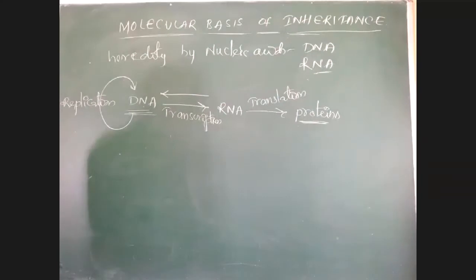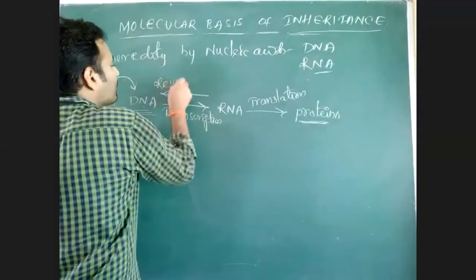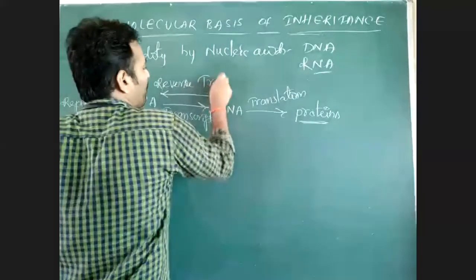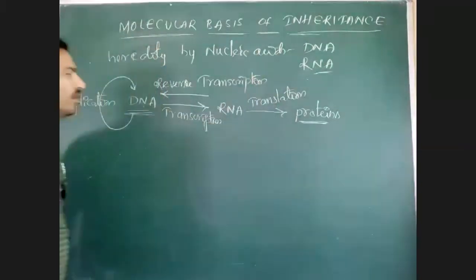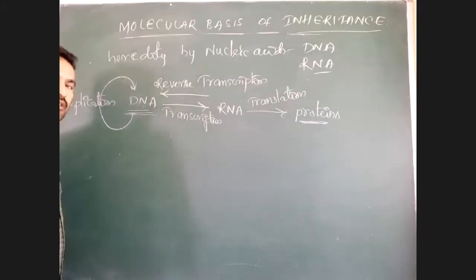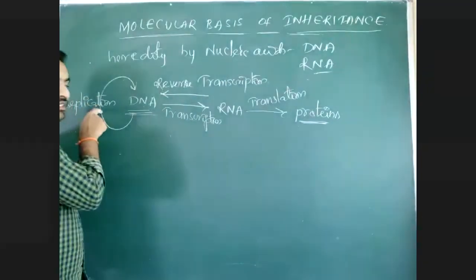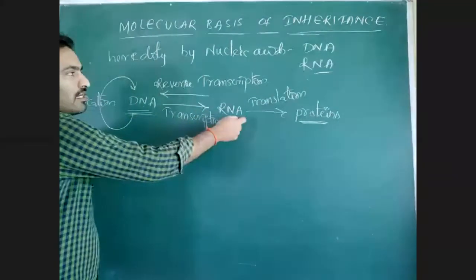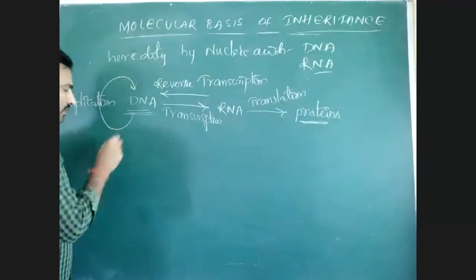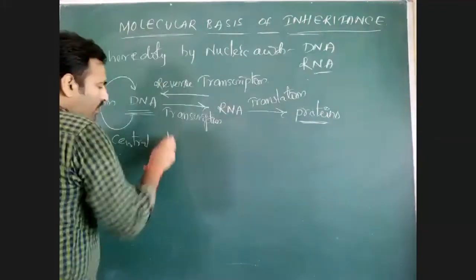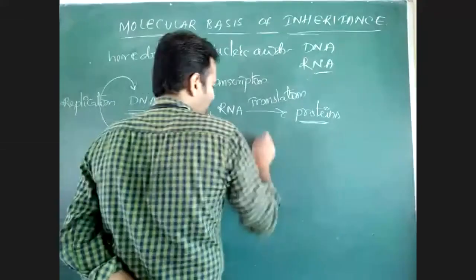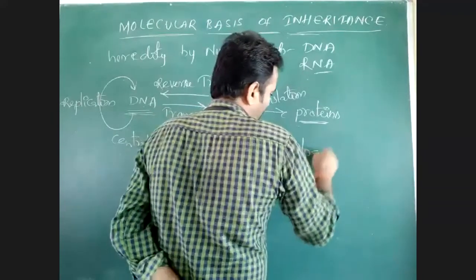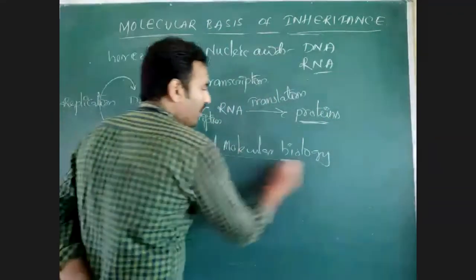If DNA is made from RNA, then that process is called reverse transcription. So totally four processes are there: replication, transcription, translation, and reverse transcription. This is totally called the central dogma of molecular biology.